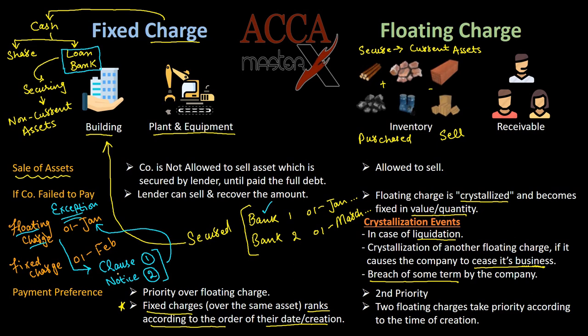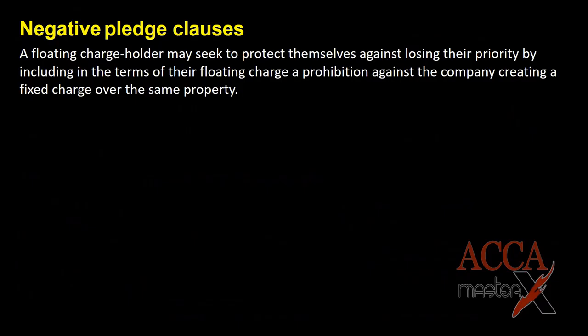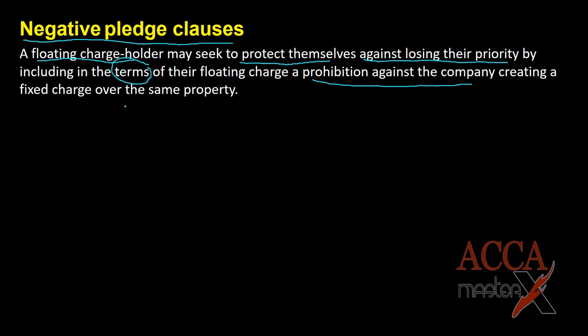This type of clause is known as a negative pledge clause. A floating charge holder may seek to protect themselves against losing their priority by including in the terms of their floating charge contract a prohibition against the company creating a fixed charge over the same property. So I hope now you understand the difference between fixed and floating charges.